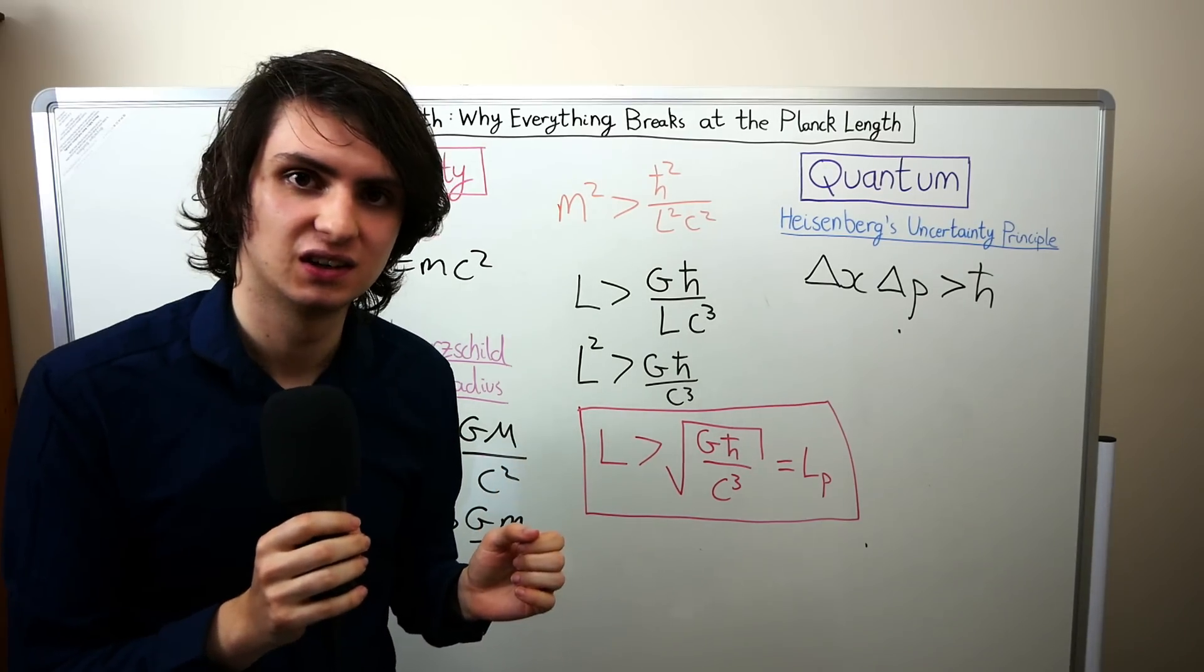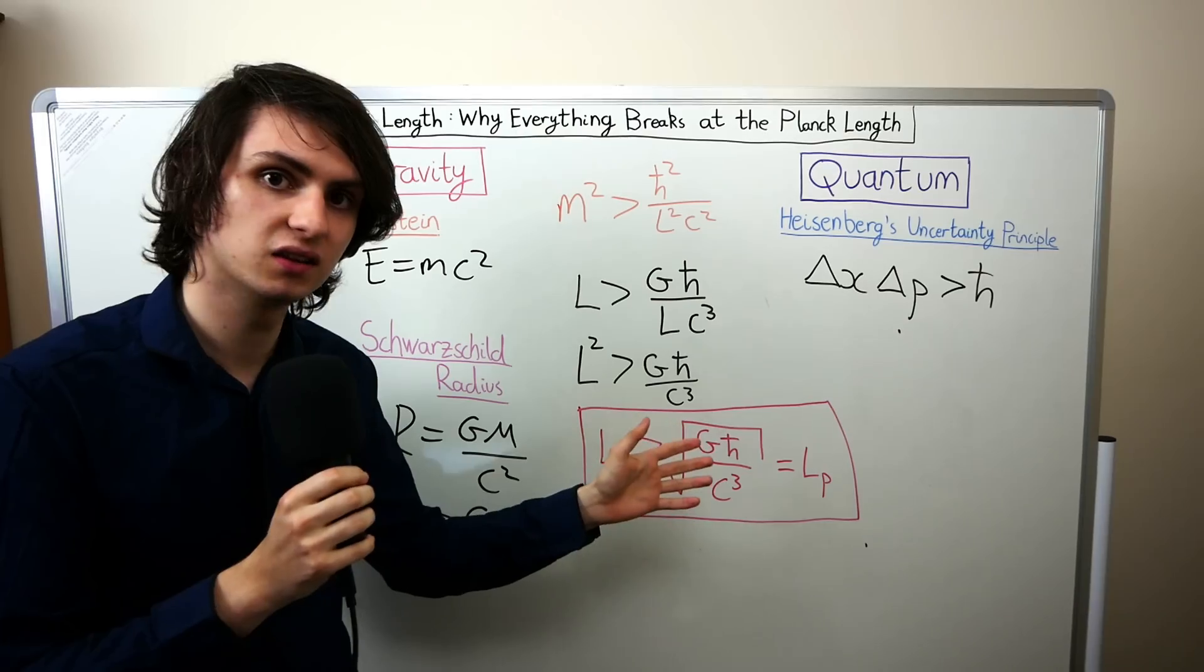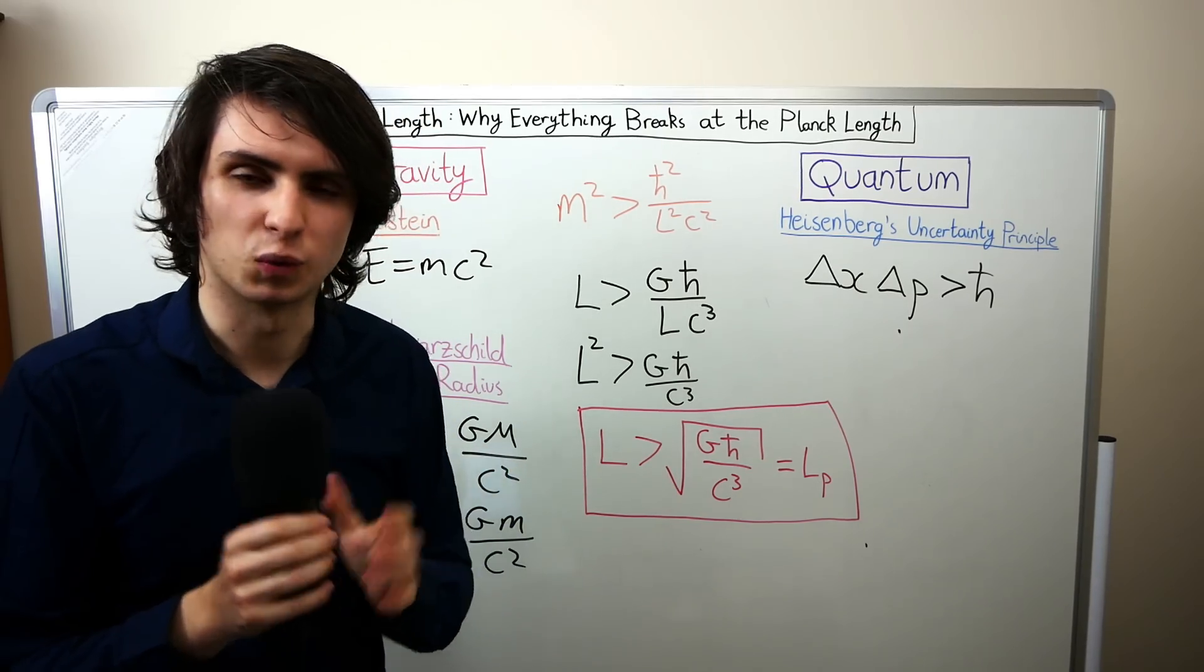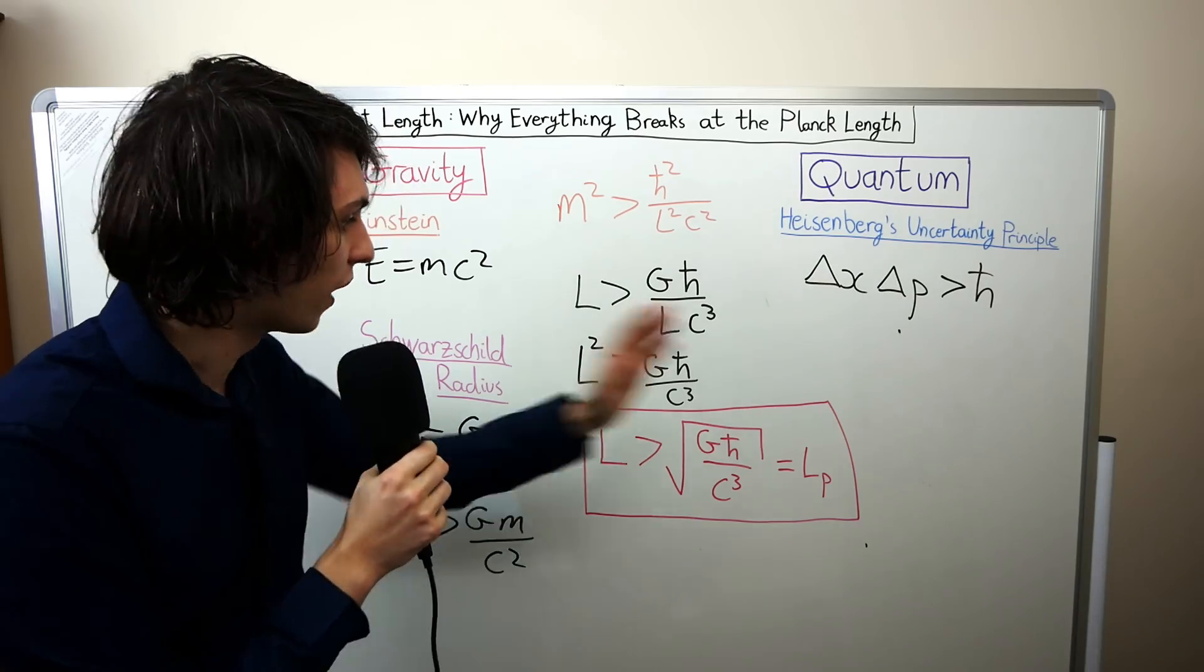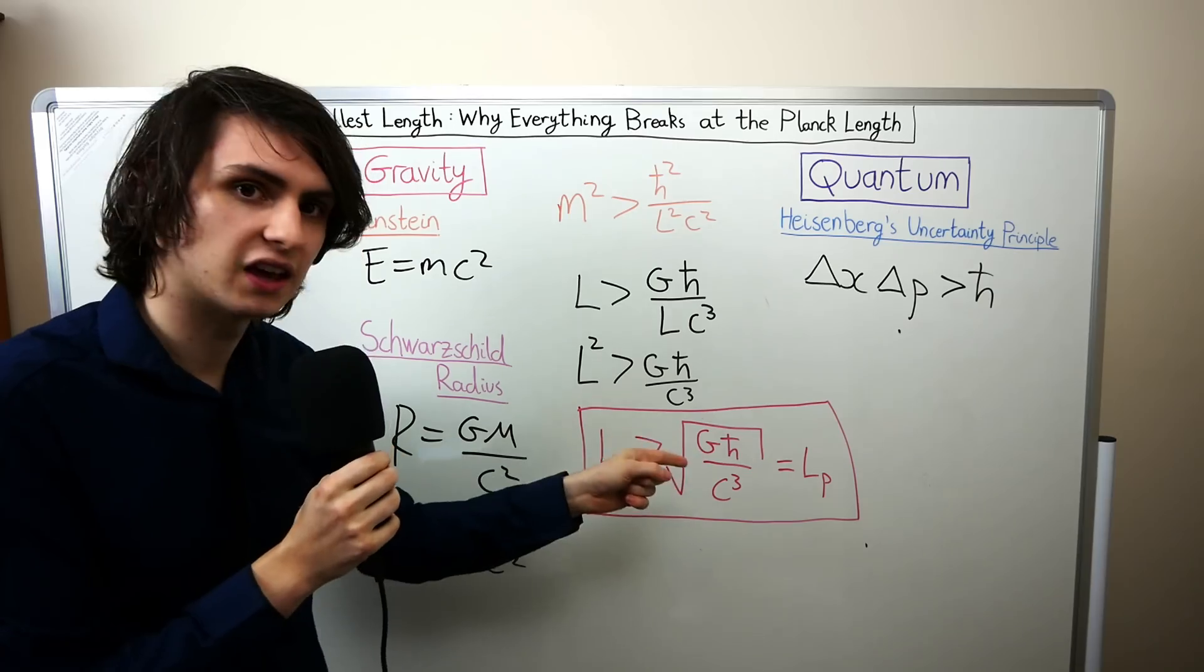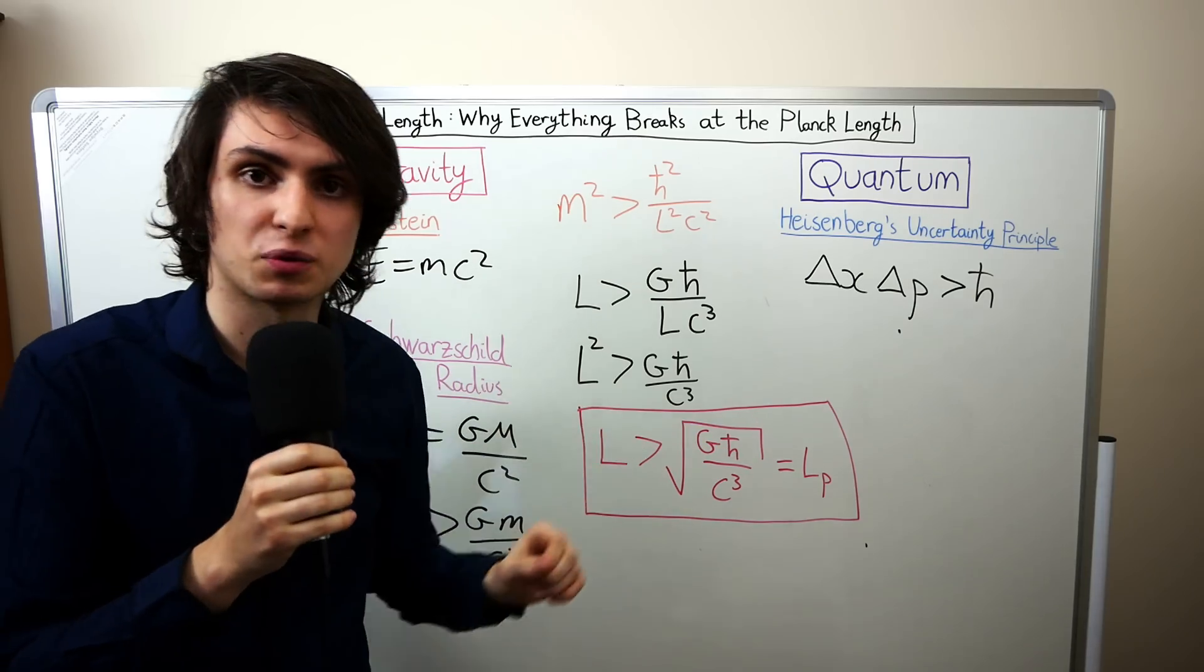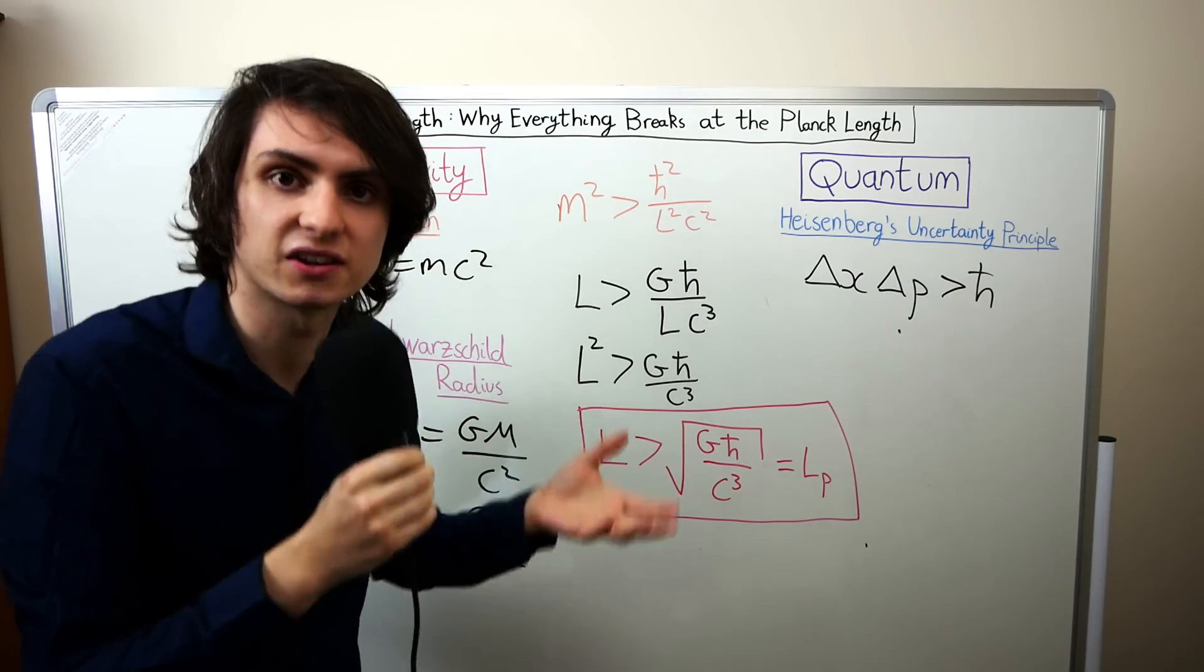So what does this mean for physics? It means that if we want to know anything about what happens below this length scale we need to have a unified theory of quantum mechanics and general relativity. We need a theory of quantum gravity if we're to understand whether we can go below this length or whether this length here is really the smallest possible length in the universe and that on this scale instead of seeing a smooth fabric of space you instead have some kind of space-time atoms.